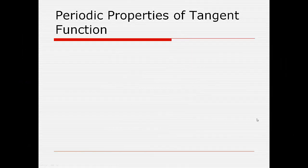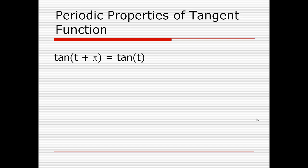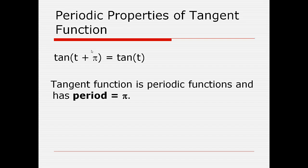Let's define the periodic properties of the tangent function. Like the sine and cosine function, it is periodic. However, the period is pi for the tangent function instead of 2 pi. So the tangent of some value t is equal to the tangent of t plus pi along the axis. The tangent function is periodic with a period of pi — it makes a complete cycle every pi. Periods repeat themselves forever, continuously, in both the positive and negative directions.